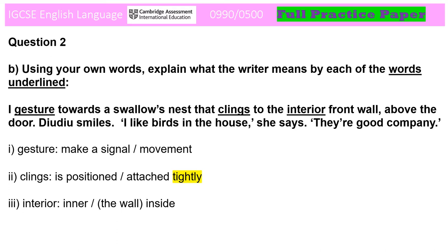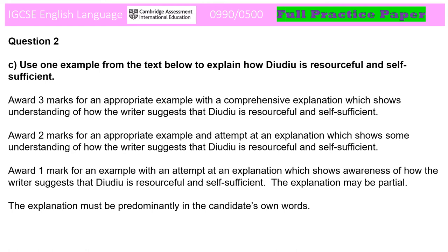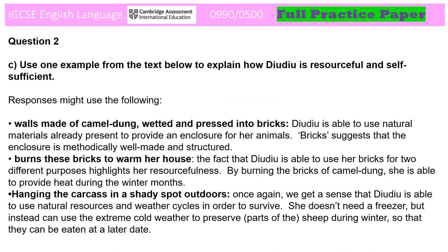For 2C, the key here is to choose a sufficiently interesting quotation so that you can write three sentences about it. Three marks, three sentences. Note the general guidance in the mark scheme: to get the full three marks, your explanation needs to be comprehensive. Here are some suggested quotations and notes. Have you used one of these quotations? If not, does your quotation still enable you to provide a comprehensive explanation of how the writer presents Duju as resourceful and self-sufficient? Press pause now to make a judgement call on your piece, with up to three marks available.